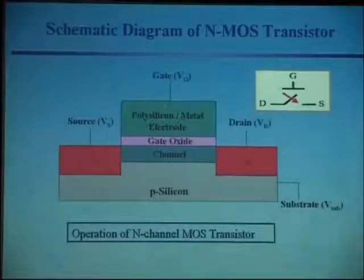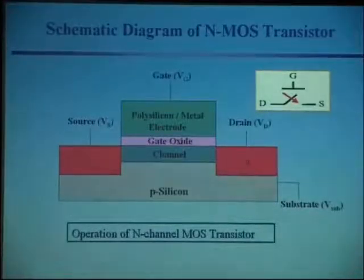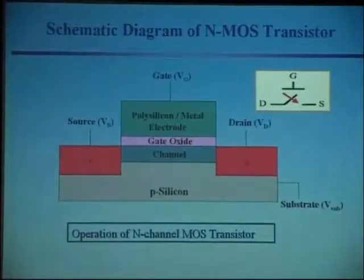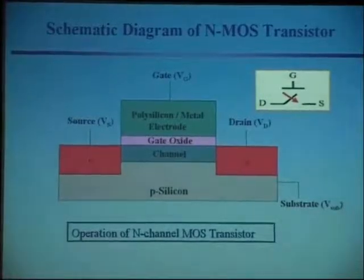So once it's turned on, current can flow through this gate, and then you can go to a capacitor to store a charge. That's how the memory works. So basically that's how it works. This is the switch.